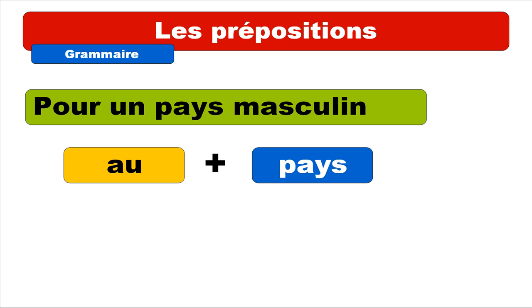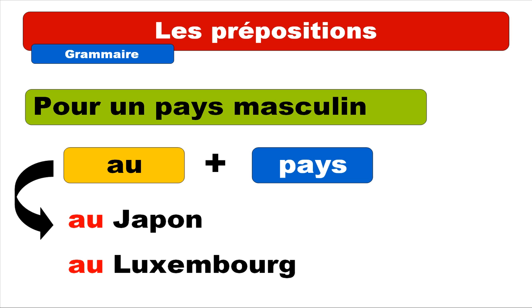For masculine countries, as we saw previously, the preposition is AU, and then the country. For example: Au Japon, Au Luxembourg.